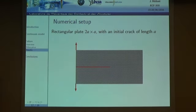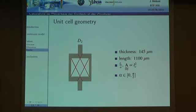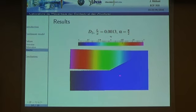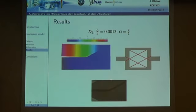Our numerical setup is a rectangle with a crack, and we test a unit cell with strong elastic anisotropy. We vary the unit cell size and its orientation with respect to the crack. For alpha equal to 90 degrees we capture an almost linear crack path, which agrees with experiments performed for the same unit cell orientation, and we see that only one crack orientation is activated.